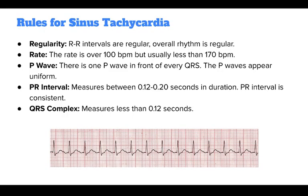The rules for sinus tachycardia: the RR intervals are regular and the overall rhythm is regular. The rate is over 100 BPM but usually less than 170 BPM. There is one P wave in front of every QRS. The P waves appear uniform. The PR interval measures between 0.12 and 0.2 seconds and is consistent. The QRS complex measures less than 0.12 seconds.